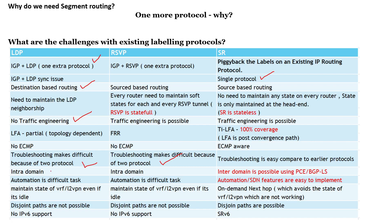Intradomain is possible with LDP and RSVP, but interdomain has challenges. That is the biggest advantage of segment routing — with the help of the Path Computation Element and BGP Link State, we can use the interdomain option with segment routing.